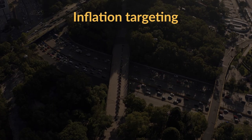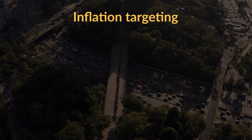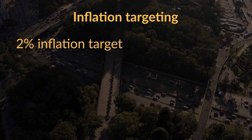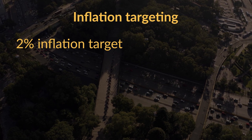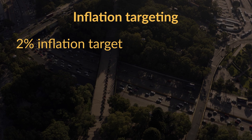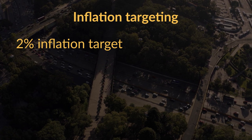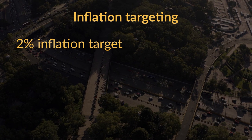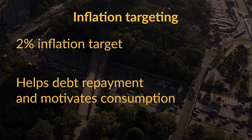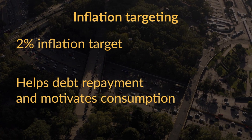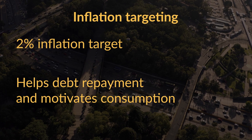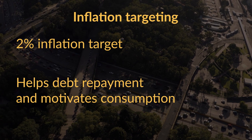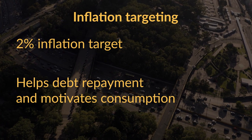Usually, central banks set an inflation target at around 2%. While this number might seem a bit arbitrary, there is some thinking behind it. Central bankers believe that a bit of inflation is good because it helps borrowers pay off their debt and motivates people to spend their money, as it is getting worth less over time. To achieve the 2% target, central bankers fiddle with the interest rate to keep inflation near that level.